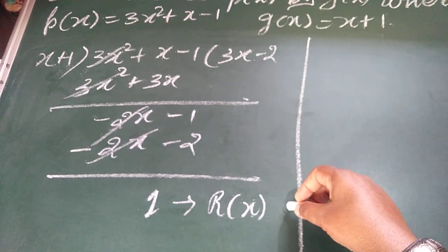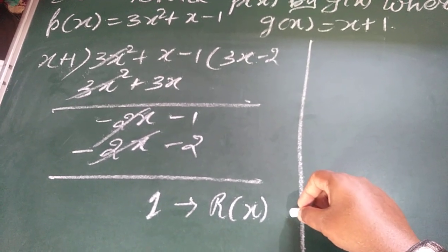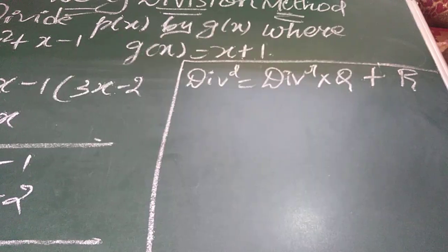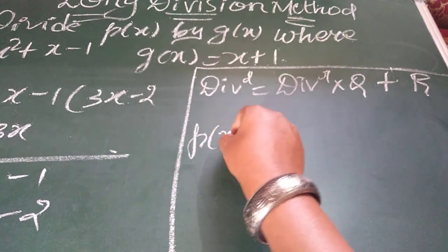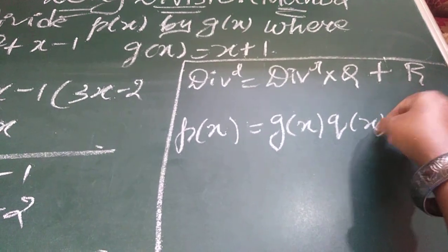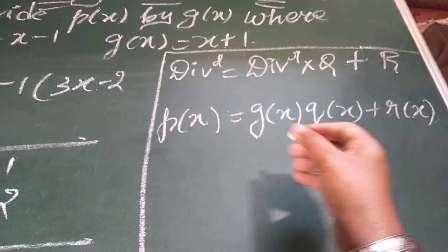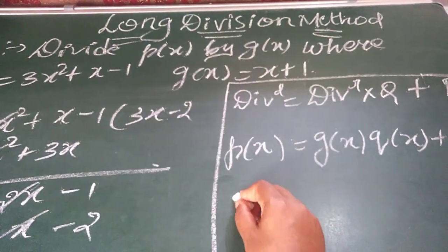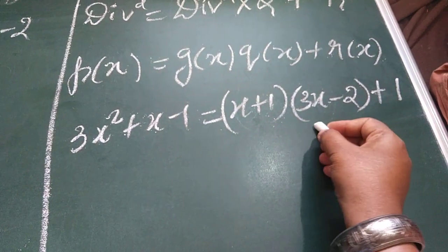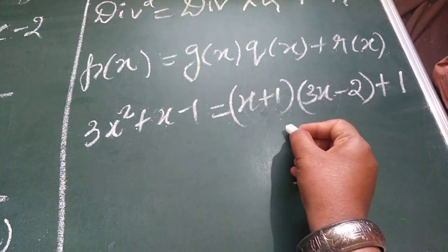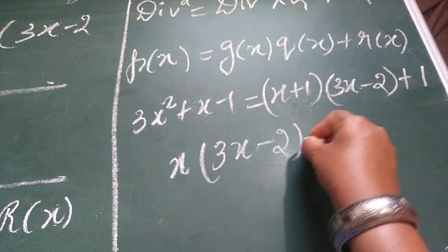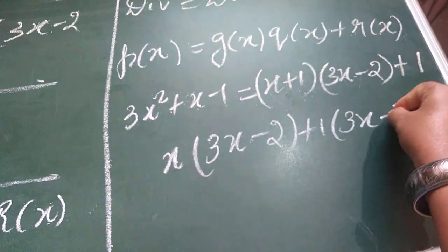So now we are going to check our solution, whether what we have done is correct or not. For that, we know the division algorithm, that is dividend equal to divisor into quotient plus remainder. We know dividend as P(x) equal to divisor is G(x), quotient is Q(x), remainder is R(x). P(x) is 3x square plus x minus 1. So now I am substituting G(x). Now, further step is we have to prove LHS equal to RHS. For that, we have to do binomial multiplication here. X into 3x minus 2 plus 1 into 3x minus 2 plus 1, that is the first term.